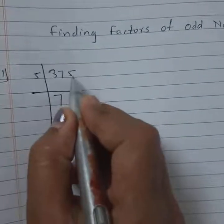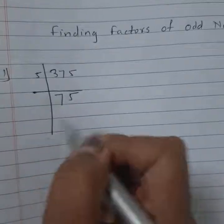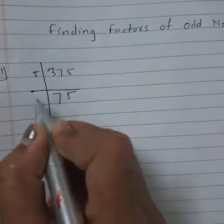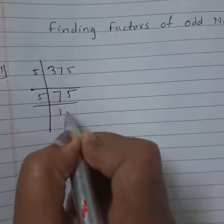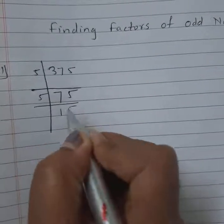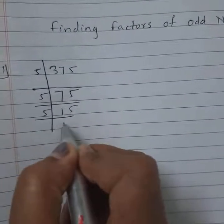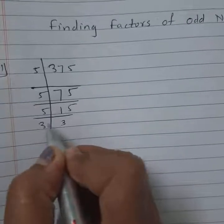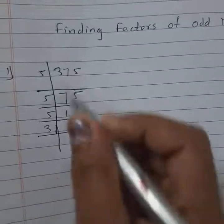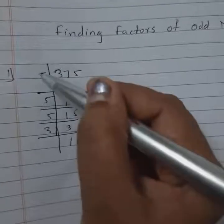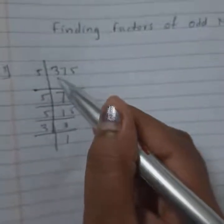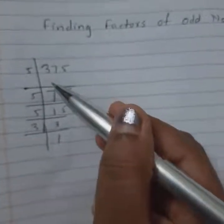Again, 75 is divided by 5. 5 times 5 is 25. 15 divided by 5: 5 times 3 is 15, and 3 times 1 is 3. Here, 5, 5, 5, 3 are the factors of 375.